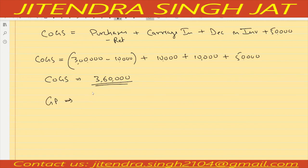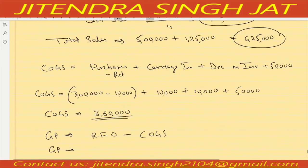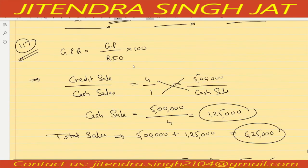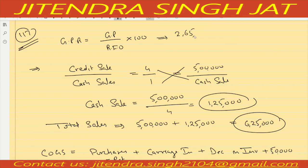Gross profit = RFO minus COGS = 6 lakh 25,000 minus 3 lakh 60,000 = 2 lakh 65,000. Gross profit ratio = 2 lakh 65,000 divided by 6 lakh 25,000, multiplied by 100 = 42.4 percent.